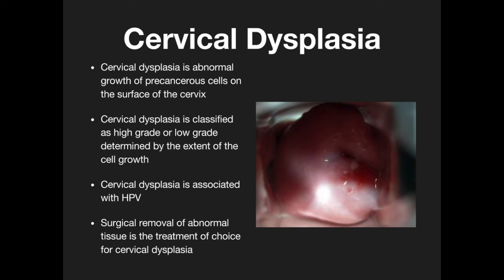Cervical dysplasia is an abnormal growth of precancerous cells on the cervix. It is classified as high-grade or low-grade, determined by the extent of the cell growth. Cervical dysplasia is associated with HPV. Surgical removal of the abnormal tissue is a treatment choice for cervical dysplasia.